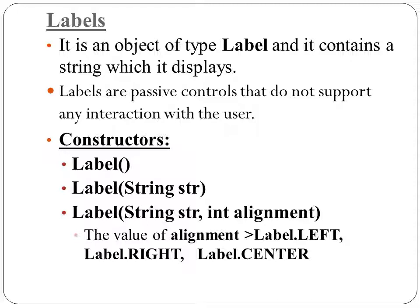The first control is Label. A label is an object of type Label; it contains a string which it displays. Labels are passive controls — they do not support any interaction with the user. There are mainly three constructors: the first creates a label with no string, the second creates a label with a specified string as its name.